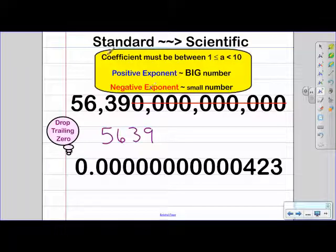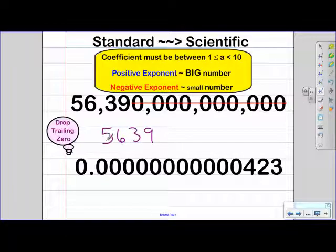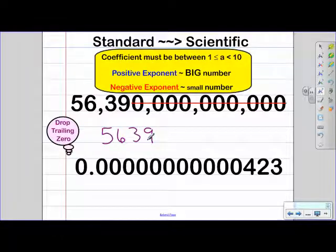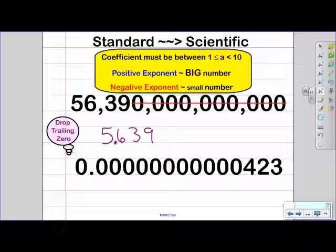Keep in mind that the coefficient must be between one and ten. So when I look at these numbers, I need to place the decimal somewhere where it will represent a number between one and ten. That's going to be between the five and the six. So in this problem, we're taking the decimal and moving it to the left so that it ends up here.